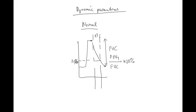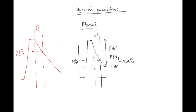Now let's look at obstructive lungs. You inhale, hold the breath, and try to blow out, but the curve is not as steep - you're not able to breathe everything out in one second. In a serious case, you might only blow out 25 percent of the FVC in one second, so FEV1 to FVC is only 25 percent - that is a serious obstruction.